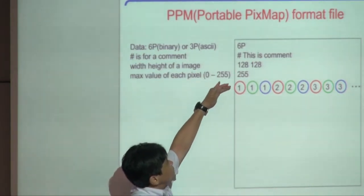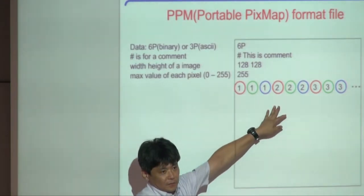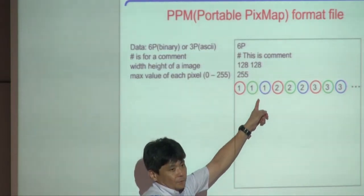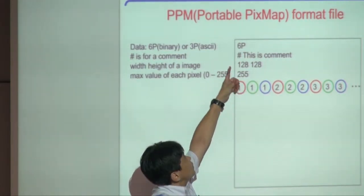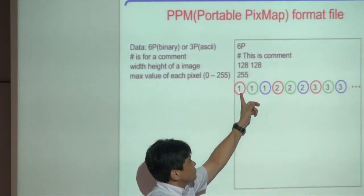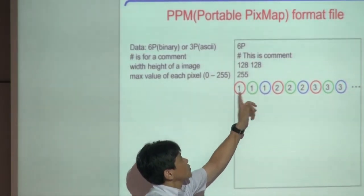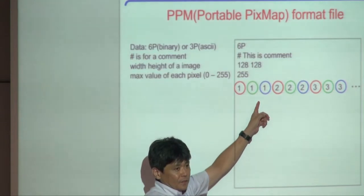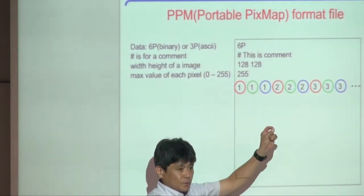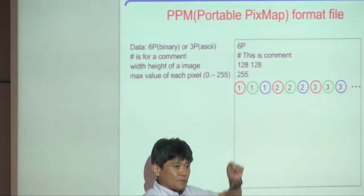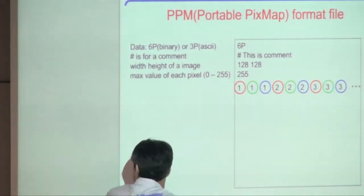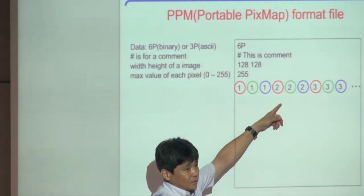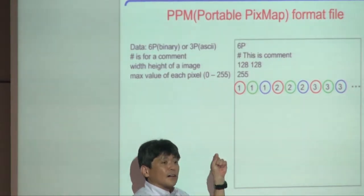From the fifth line onward, the actual image data appears. If you specify P6, these are three bytes per pixel — each byte corresponds to red, green, and blue respectively. The first set of three bytes corresponds to the first pixel, which is the top-left pixel of the image. The second set of three bytes corresponds to the second pixel.